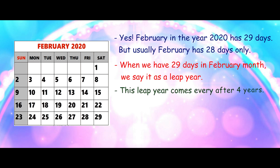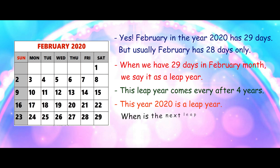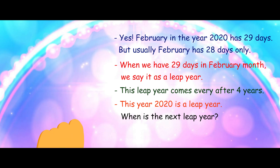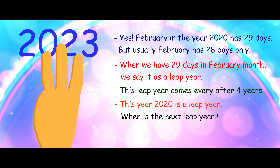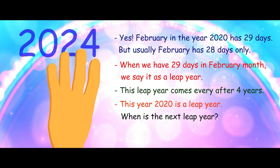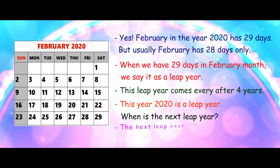When we have 29 days in February, we call it a leap year. This leap year comes every 4 years. This year 2020 is a leap year, so when is the next leap year? Count on your fingers: 2021, 2022, 2023, 2024. So our next leap year will be 2024.